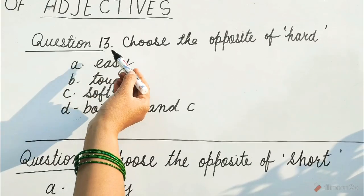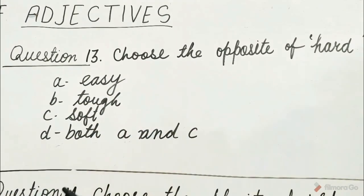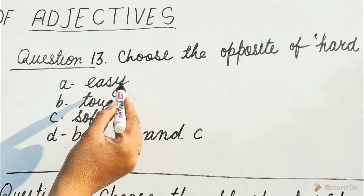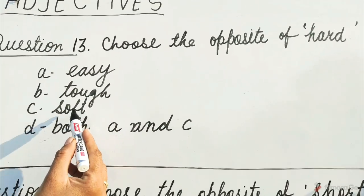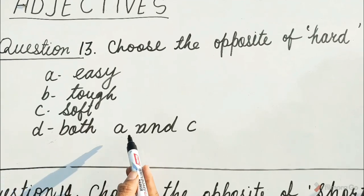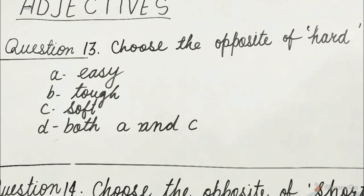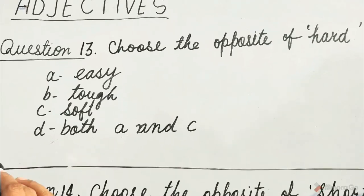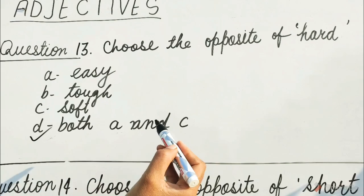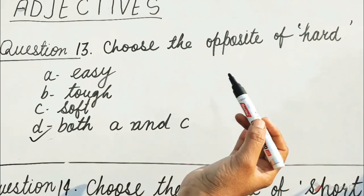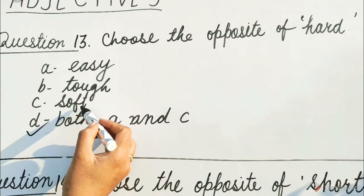Question 13: Choose the opposite of hard. Options are A. Easy, B. Tough, C. Soft, D. Both A and C. Guess children, which option will be correct? Yes, it is D — Both A and C. Because the opposite of hard is easy and soft.